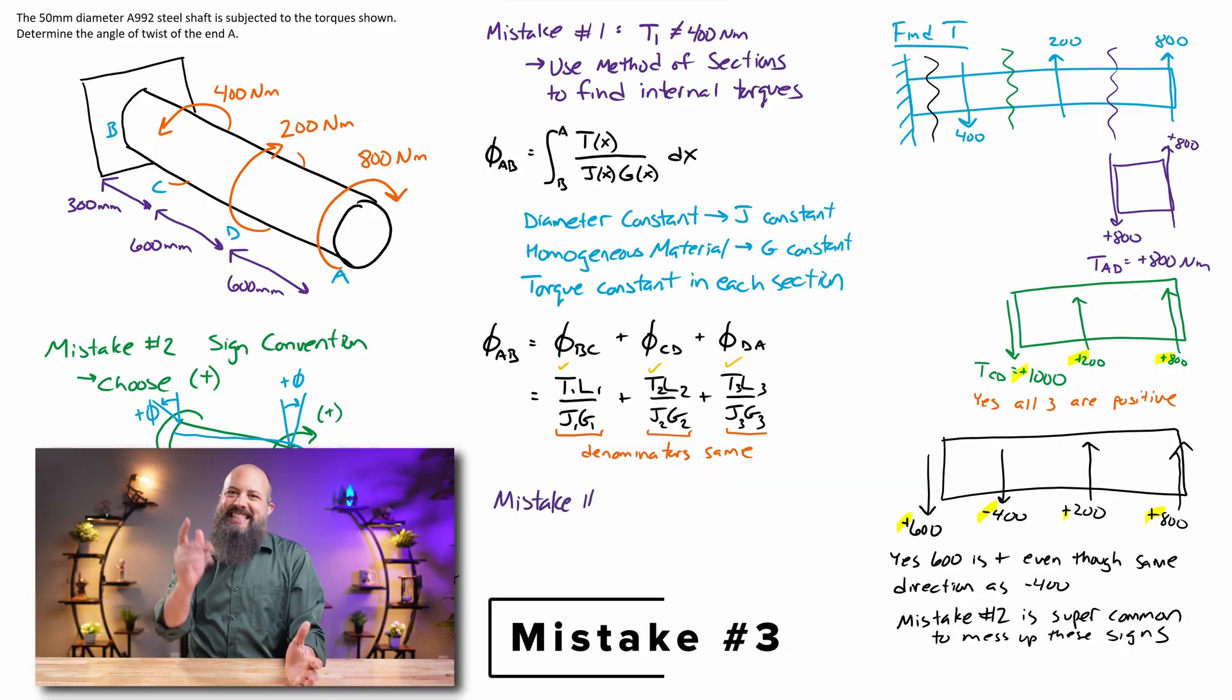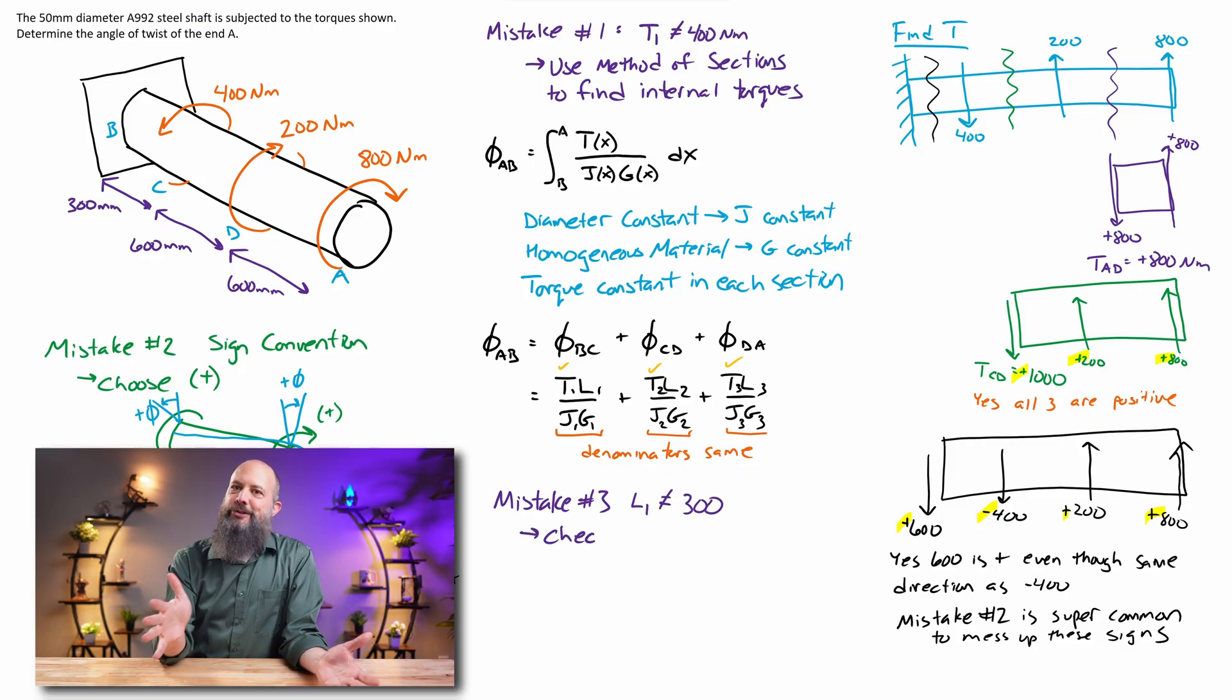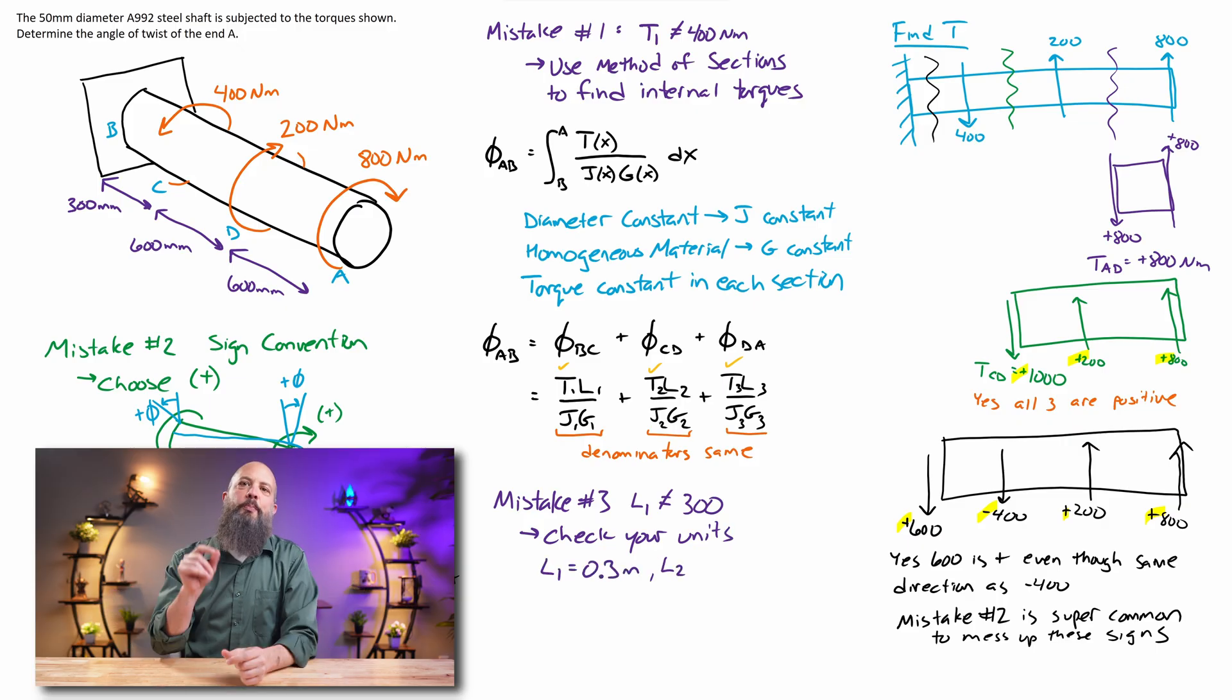Mistake number three: distances. Distances are not 300, 600, 600, right? You got to convert to meters. Always convert everything to meters, newtons, right? Your base unit, so 0.3, 0.6, and 0.6 meters for your lengths.